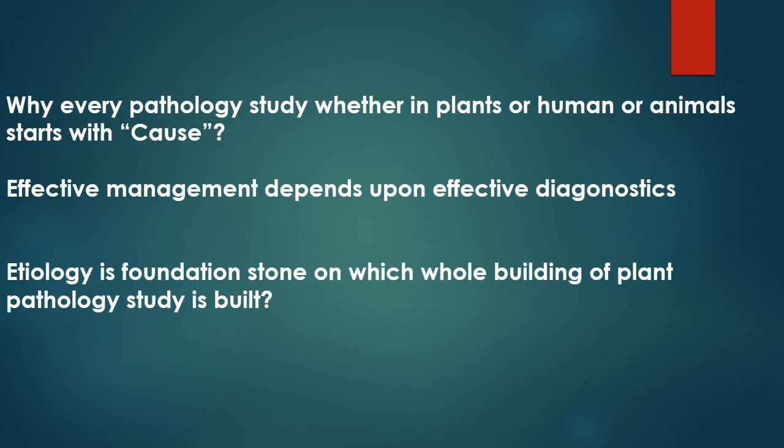This is not only important in plant pathology but also in human and animal pathology, because if we don't know the cause of the disease we cannot manage or control it. For example, if the plant is suffering from a viral infection and you wrongly conclude that it is infected by fungi or bacteria and apply some fungicide or antibiotic, it will not work because the cause is not the fungus or the bacterium — the cause is the virus.